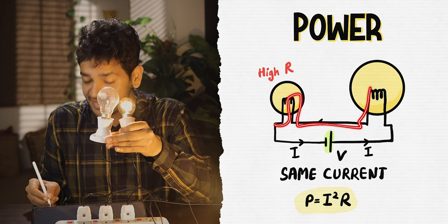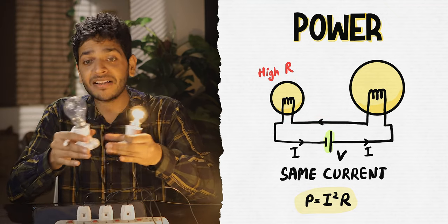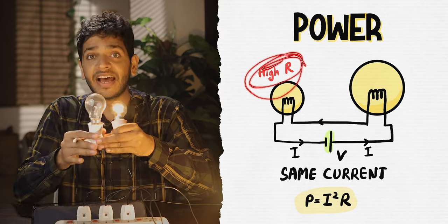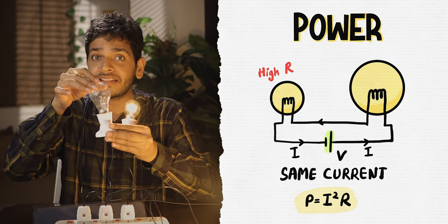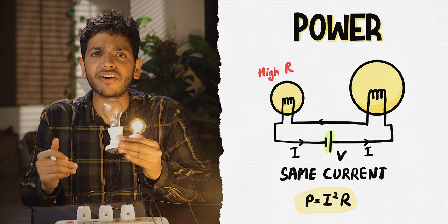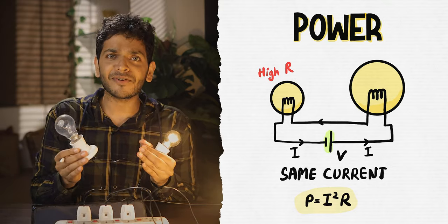Instead, they have the same current, so the bulb with higher resistance has higher power and the bulb with lower resistance is not even hot enough to glow. Subscribe for more such videos.